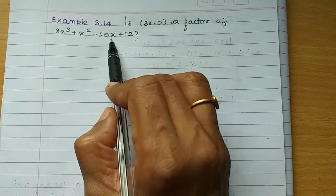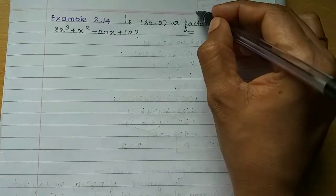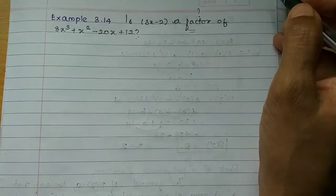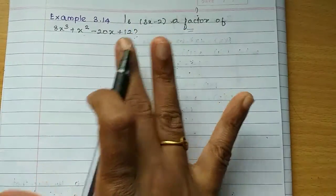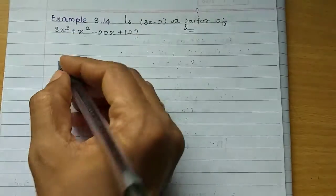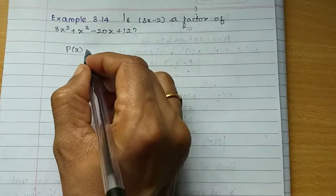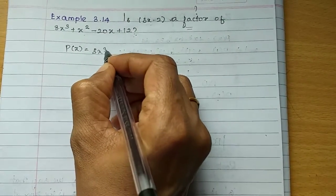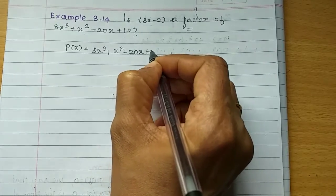This 3x minus 2 is a factor in this polynomial. If you have a factor in this condition, the remainder will be zero. So we have a factor now, let's check this remainder zero. If you have a factor in this polynomial, we'll name it P of x. Then, 3x cubed plus x squared minus 20x plus 12.